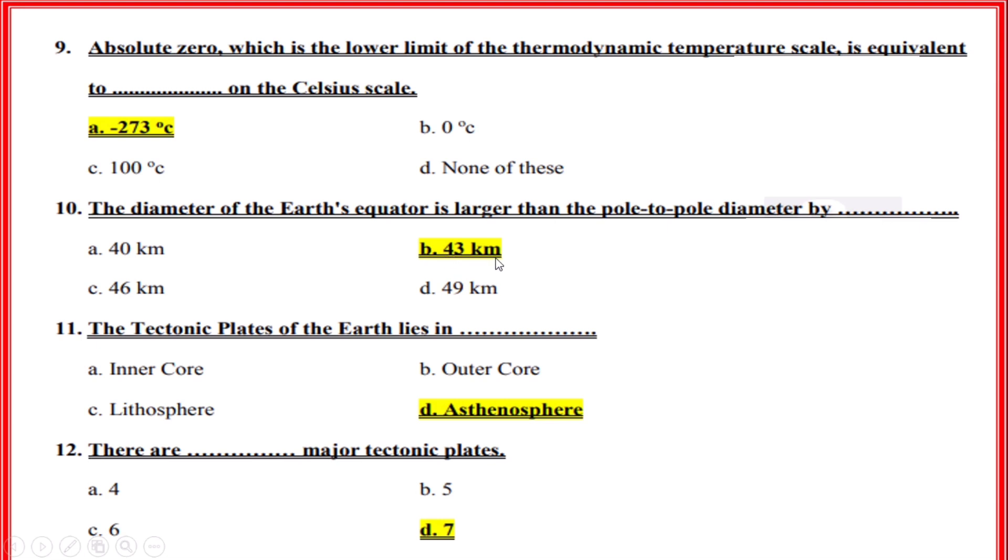The tectonic plates of the Earth lie in the asthenosphere. There are how many major tectonic plates? Correct option: D, 7.